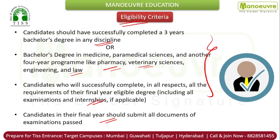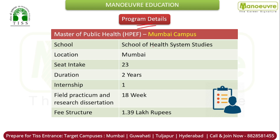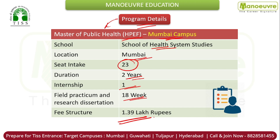If you fulfill these criteria, you can definitely target this program. The program — Master of Public Health: Health Policy, Economics and Finance — is offered at the Mumbai campus under the School of Health System Studies. Seat intake: 23 seats only. Duration: two years, with one internship — a field practicum and research dissertation of 18 weeks. Regarding fee structure, it is quite nominal for such a top-notch program: the fee is 1.39 lakh rupees.